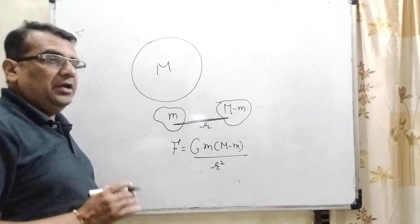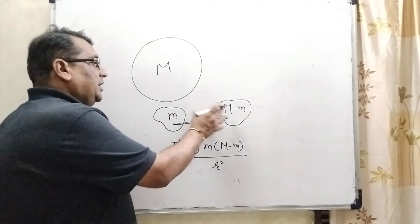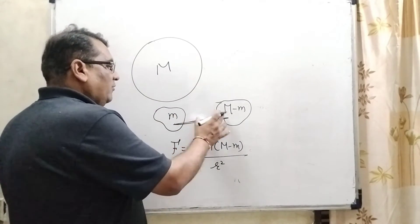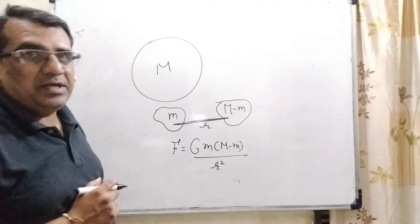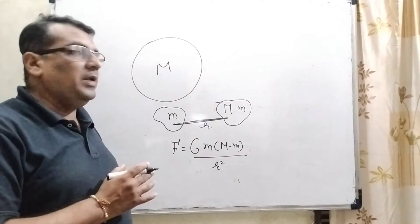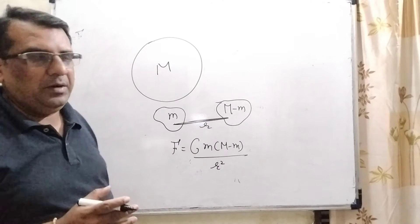At the distance between the both bodies that is considered R, then force of attraction F equal to G m times capital M minus small m upon R square. That is the first condition. But here we have given what is the relation of both the masses when the force of attraction become maximum.